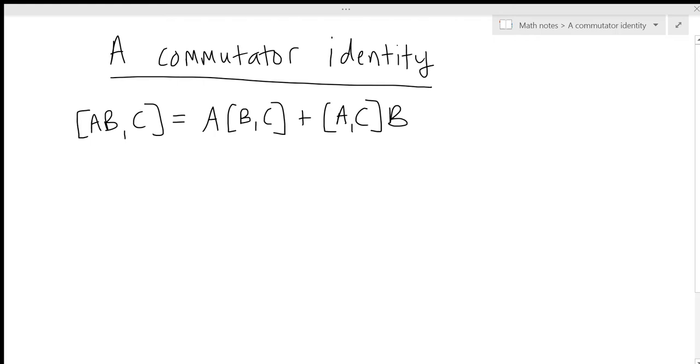We have the commutator of the product A times B with the third operator C. And this identity is useful because it expresses this in terms of commutators of just two operators at a time, B with C and then A with C. And this identity is very useful in quantum mechanics.